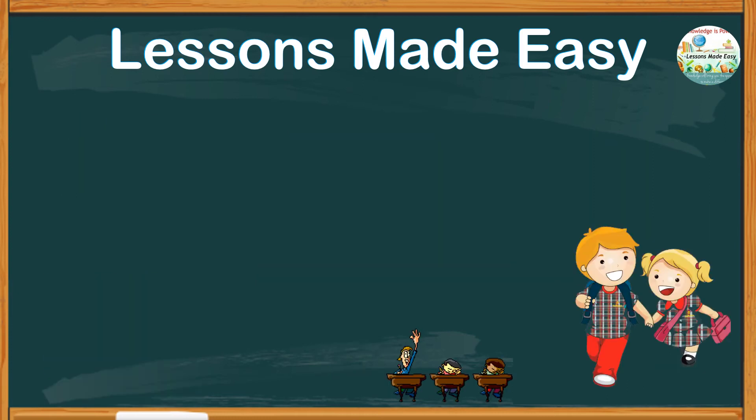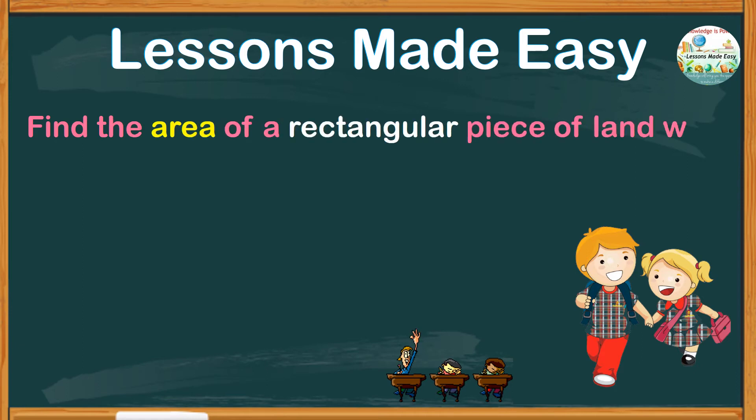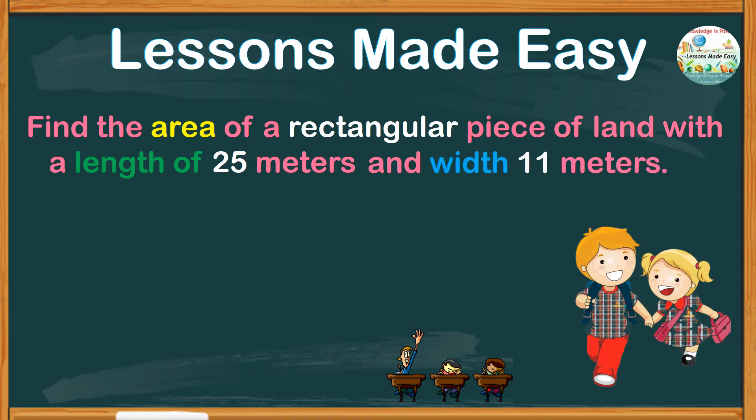Let's try applying this concept in a word problem. Find the area of a rectangular piece of land with a length of 25 meters and width 11 meters. So basically, all we need to do is find the area of a rectangle, which is area equals length times width.